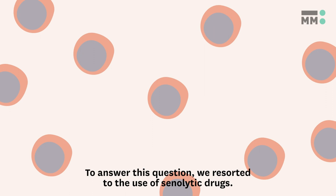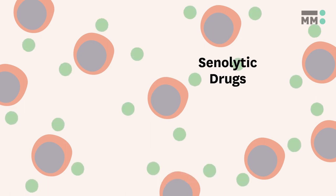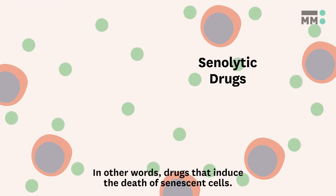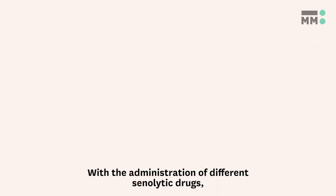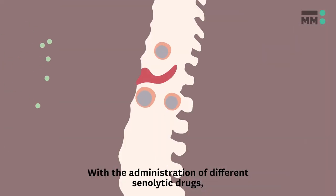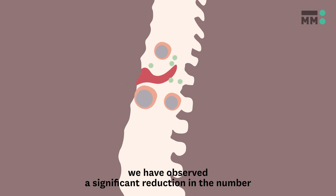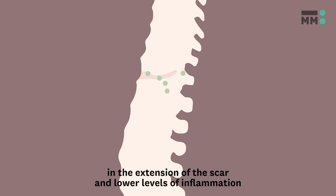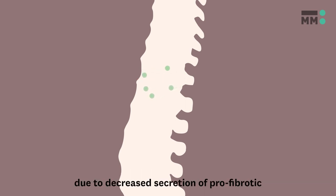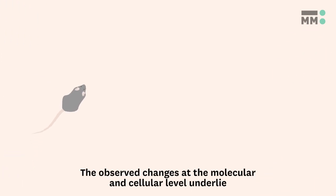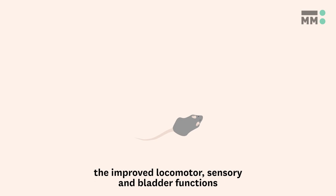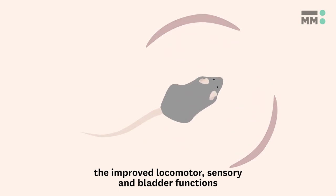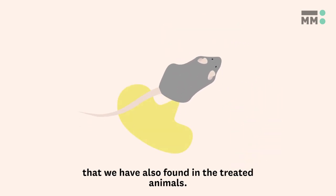To answer this question, we resorted to the use of senolytic drugs – in other words, drugs that induce the death of senescent cells. With the administration of different senolytic drugs, we observed a significant reduction in the number of senescent cells as expected, but we also found a decrease in the extension of the scar and lower levels of inflammation due to a decreased secretion of pro-fibrotic and pro-inflammatory factors. The observed changes at the molecular and cellular level underlie the improved locomotor, sensory and bladder functions that we have also found in the treated animals.